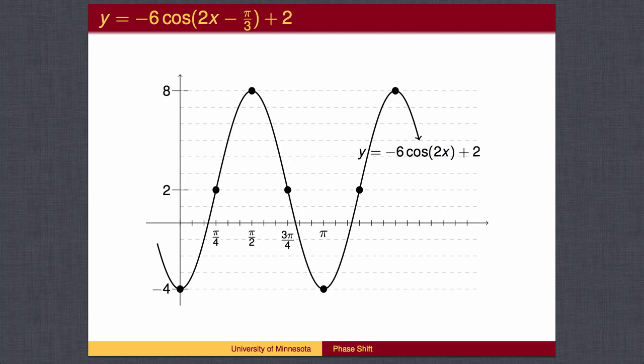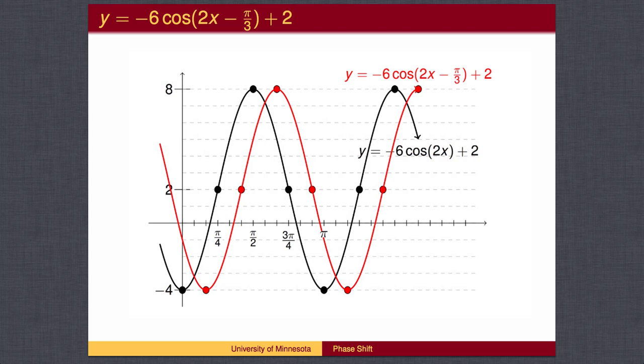We can then draw the unshifted graph, extending the wave as far as we wish by following the pattern. Finally, we shift the reference points by the phase shift, which was pi over 6, or 2 pi over 12. We can then draw the final graph.